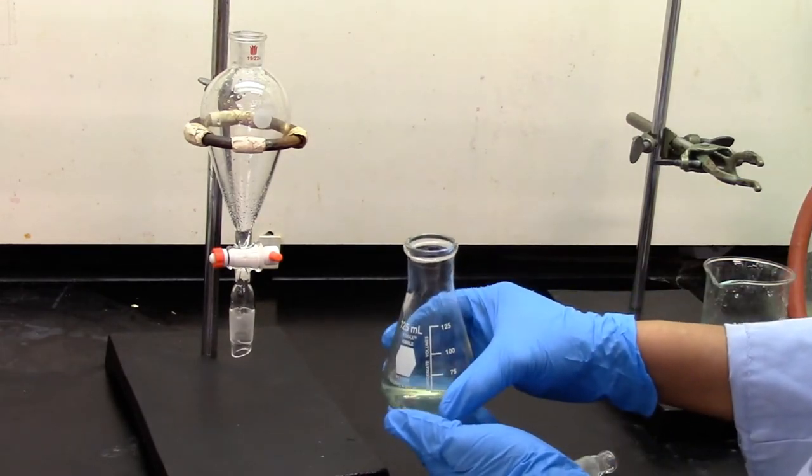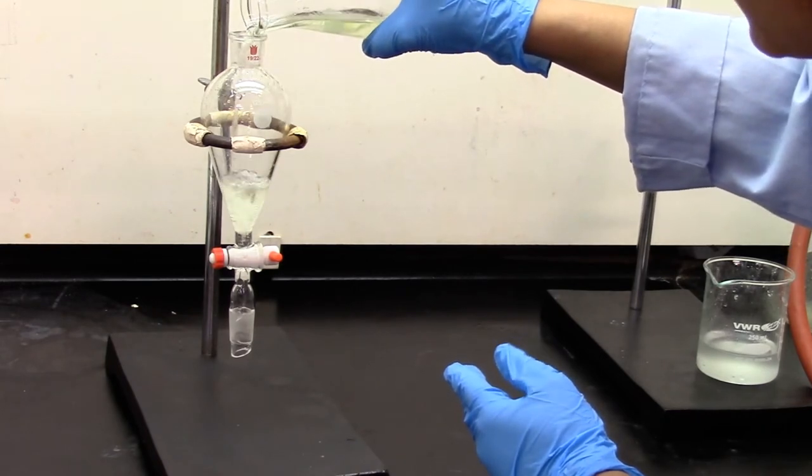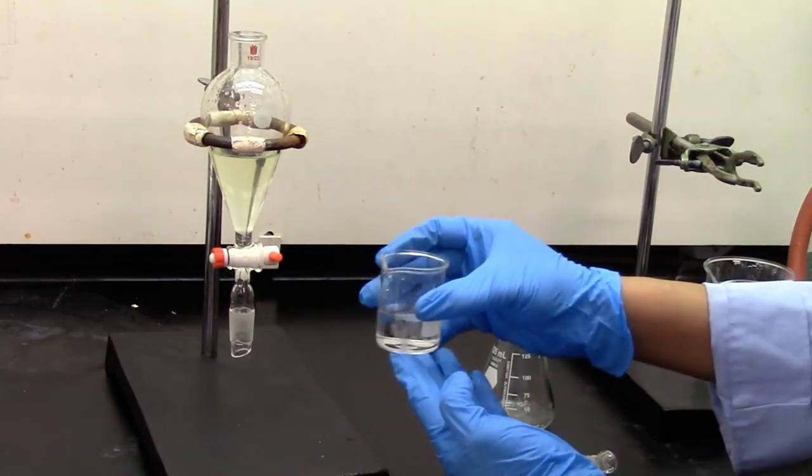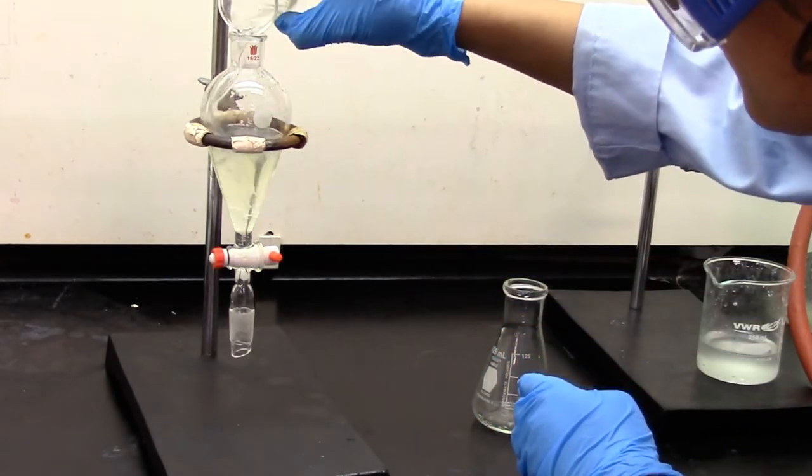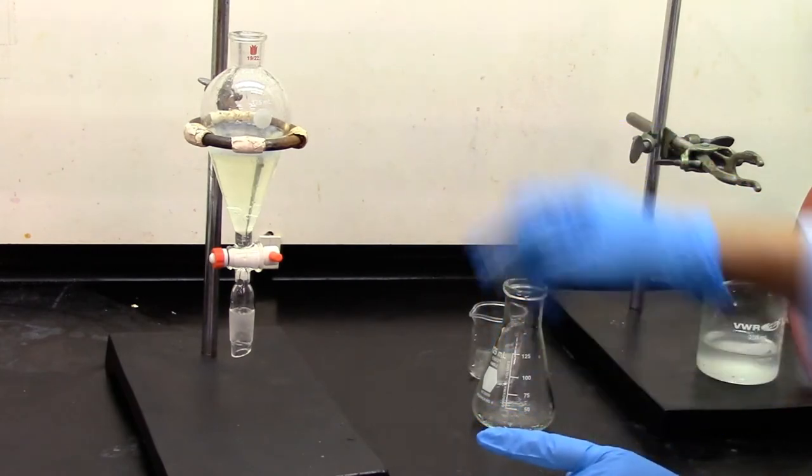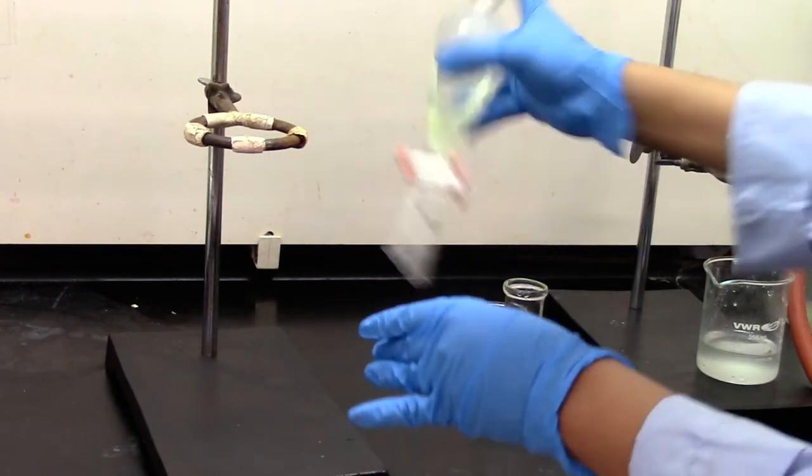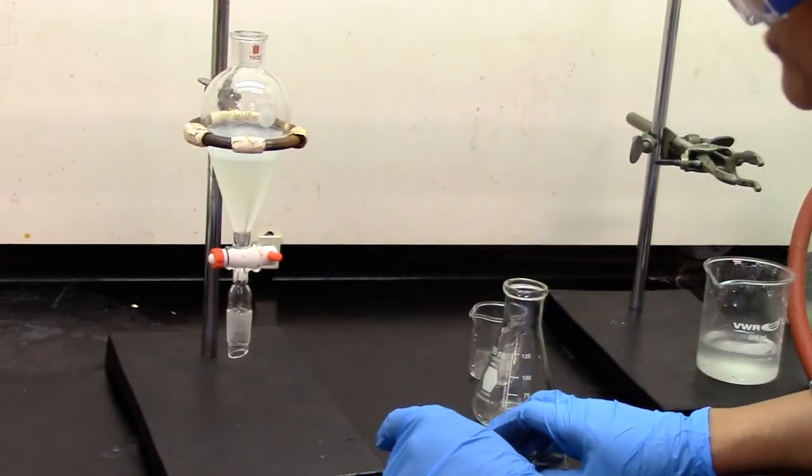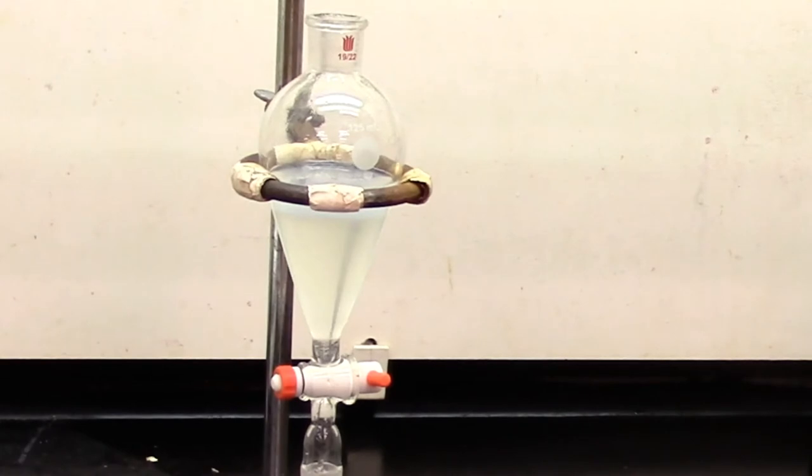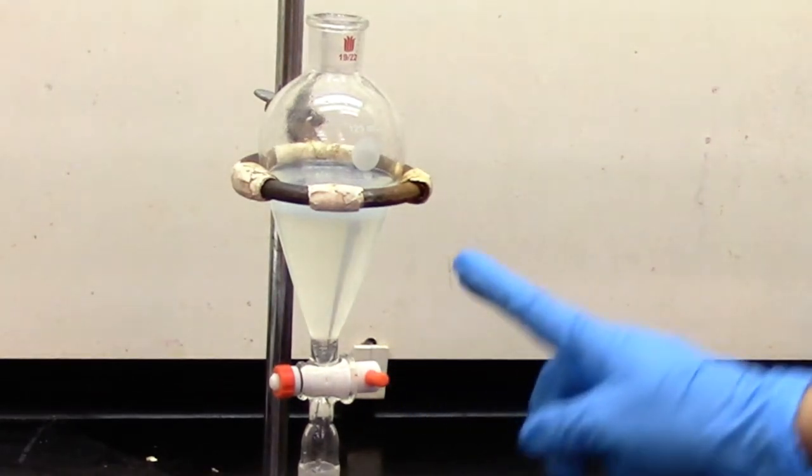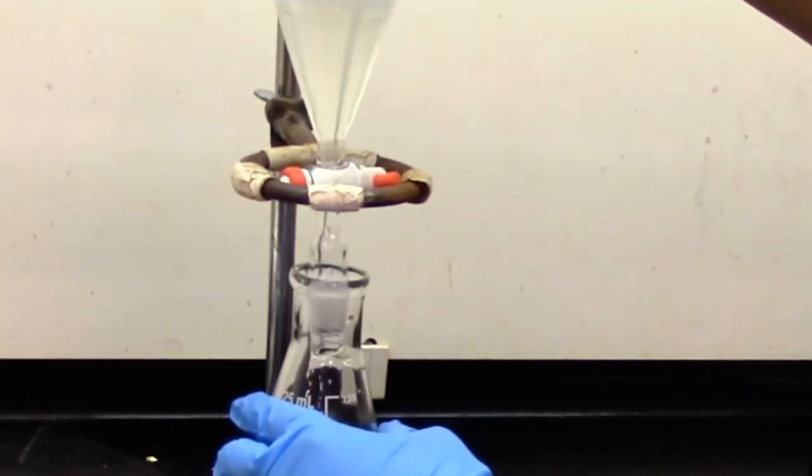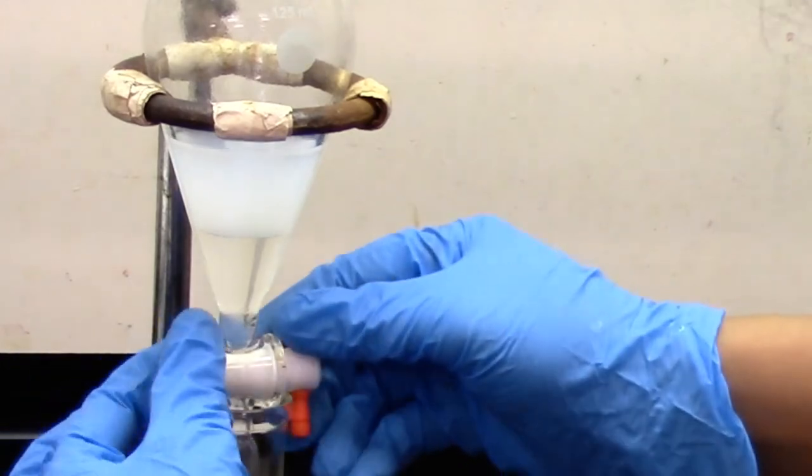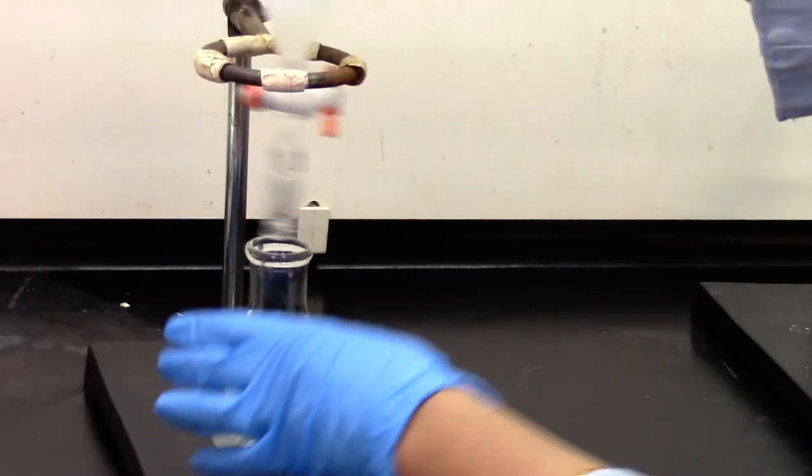The dichloromethane layer, which contains our product, goes back to the separatory funnel. And I'm going to add 25 mL of saturated bicarbonate solution. This should neutralize any excess acid that's present with the product. Give it a mix. And then uncap and let it stand to separate into two layers. The bottom layer goes into a clean Erlenmeyer flask. The top layer is a discard.